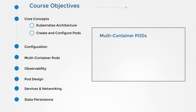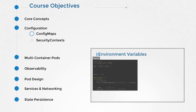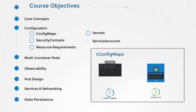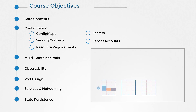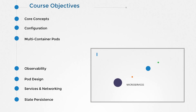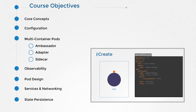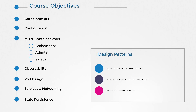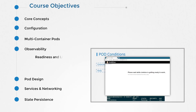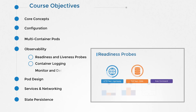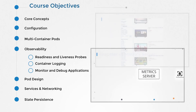The next section is on configuration and covers topics like config maps, security contexts, resource requirements, secrets, service accounts, etc. We will then look deeper into multi-container pods and the different patterns such as ambassador, adapter, and sidecar, with examples and use cases around these. We will learn about readiness and liveness probes and why you need them. We will also look at some of the monitoring, logging, and debugging options available with Kubernetes, specifically around pods, containers, and applications.